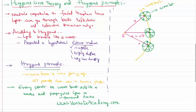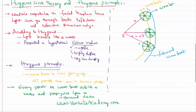Again, you can see all these points are in the same phase. The line joining all these points is called the forward wavefront, which takes the light forward. That means every point on the wavefront behaves as if it is a source, propagating the light in a forward direction.